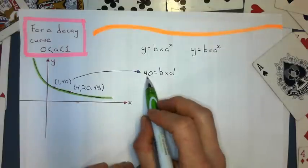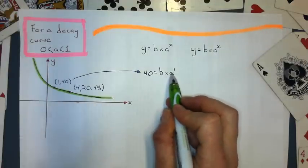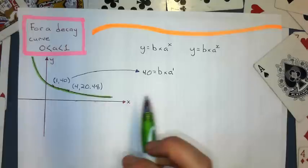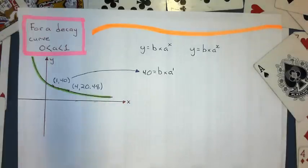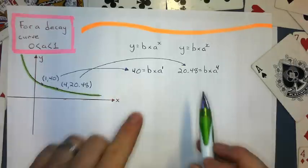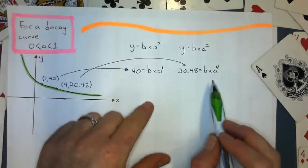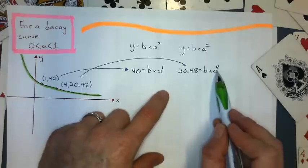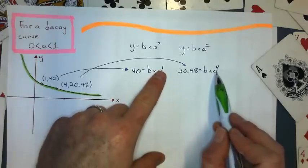So I'll take this coordinate and substitute the x and y values into general form here. This one works out to be 40 equals b times a to the 1 or just b times a. But I'm not going to simplify it just yet. And then I do it for this coordinate. I've got my two equations. Now I'm going to divide the two. And I'll put this equation on top just because the a to the fourth is a higher power than a to the first. And I'm going to leave that as a to the first and you'll see why.